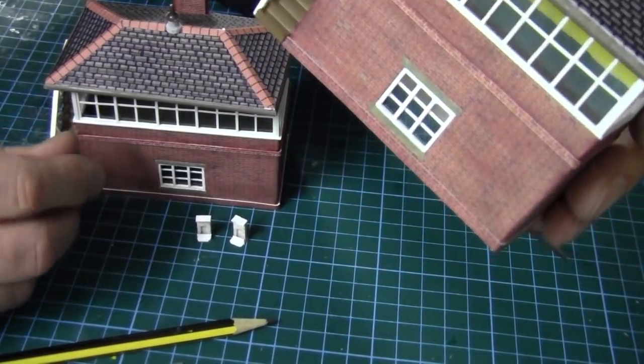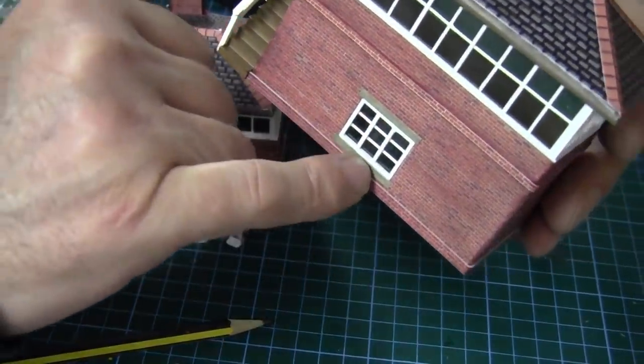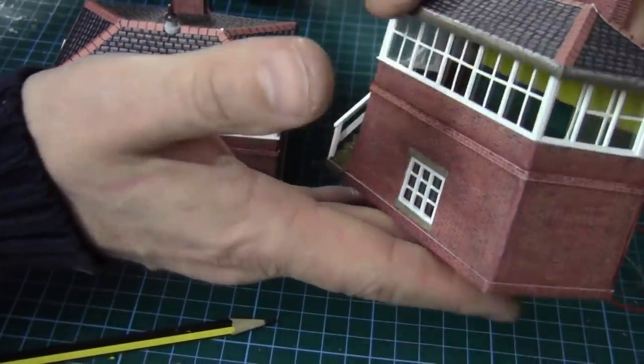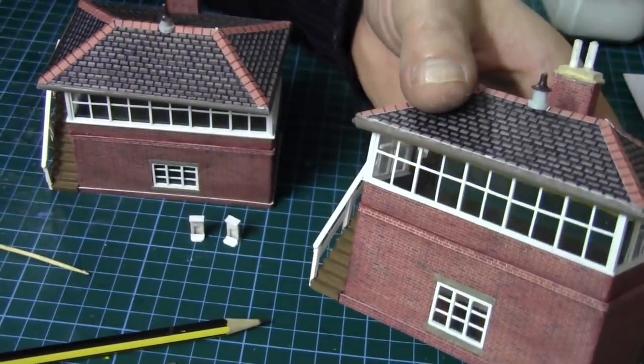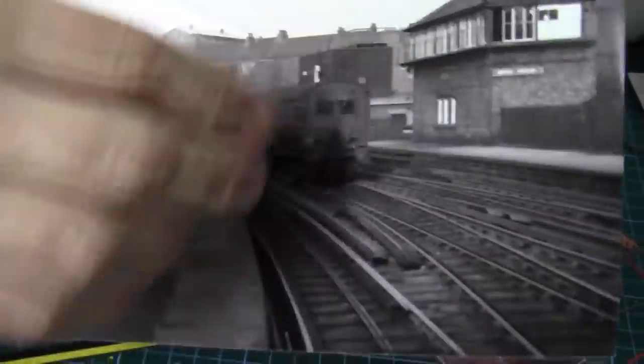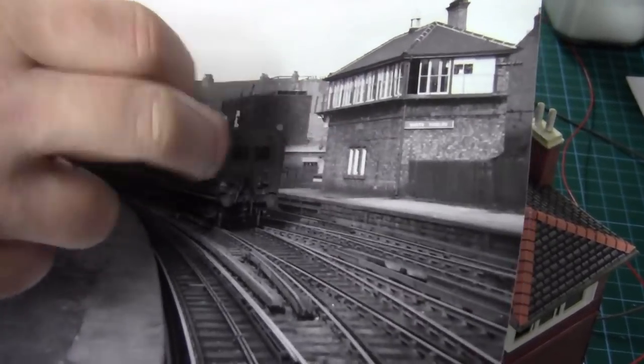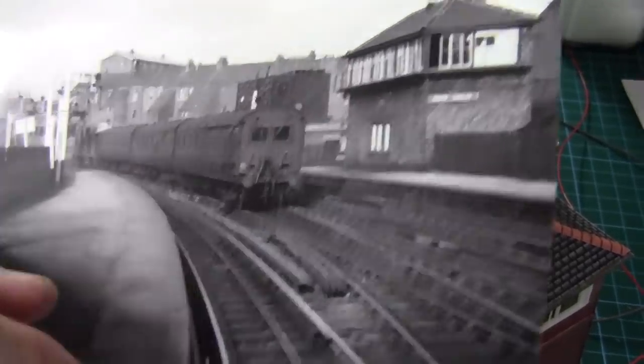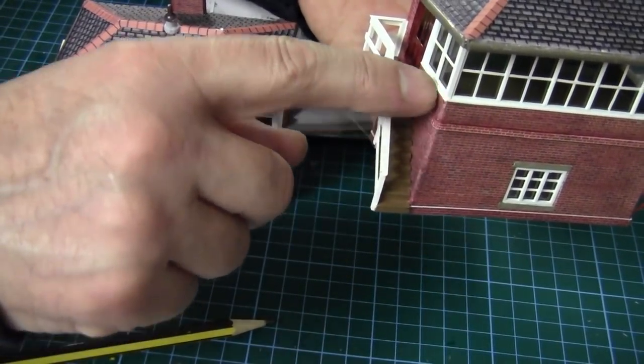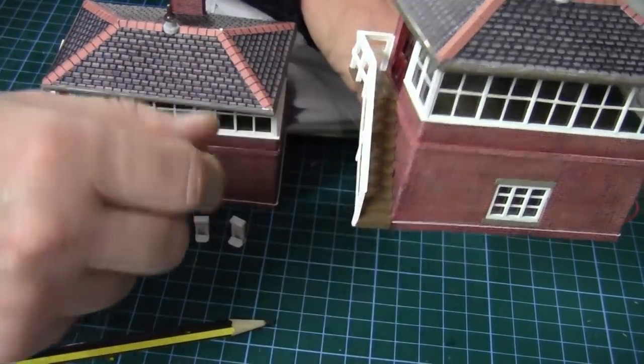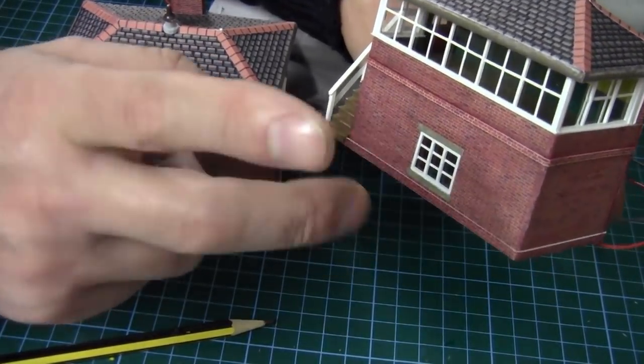Now then in the photograph we have which looks like a landing which goes right around the globe, round the signal box. I won't be putting that in and the reason being, because of the steps here, because to bring it right around poor old signalman will end up banging his head on it. And to be honest I don't think it needs it. So I'm going to leave that off. So this now is virtually ready for painting. The roof needs painting and then weathering.